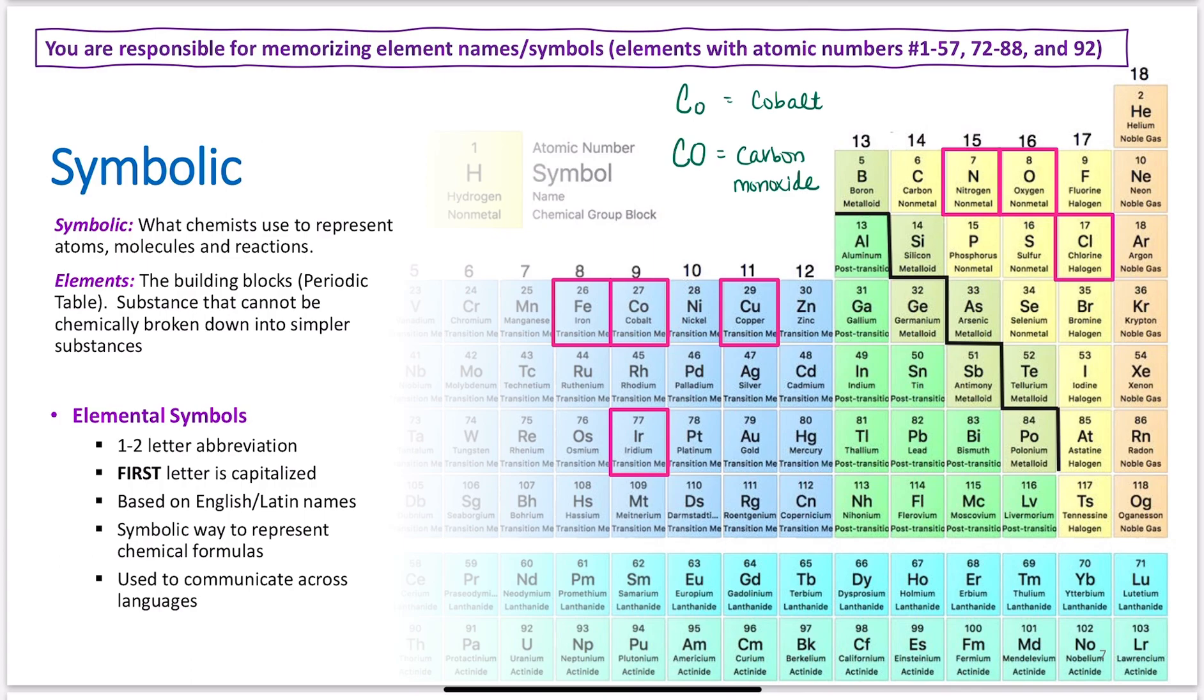The elemental symbols are a symbolic way of representing chemical formulas. We use this periodic table a lot. I will teach you guys how to use it as well. It has a wealth of information for us. The first thing you need to do is start memorizing the elemental names to the elemental symbols. You do not need to know their atomic numbers, you do not need to know their atomic masses. You need to know the name to symbol and symbol to name. Again, this table is helpful because it's used to communicate across languages. I can go around the world, and this table is what is used.